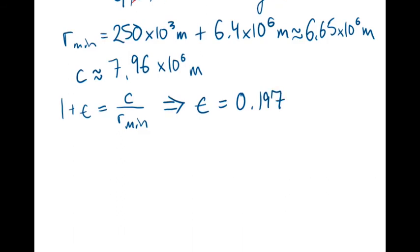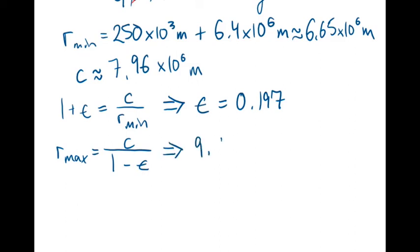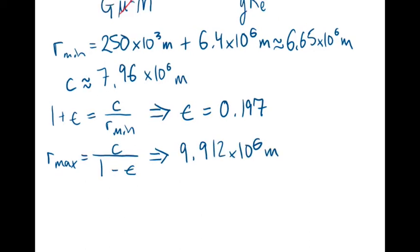The second half of the problem asks us to find the height above the Earth at apogee, which is the maximum radius. Recalling equation 8.50, the maximum radius equals C over 1 minus the eccentricity, which yields a maximum radius of 9.912 times 10 to the sixth meters. Recall that this is the radius, which includes the radius of the Earth. So the maximum height is r_max minus the radius of the Earth, which equals 3512 kilometers.